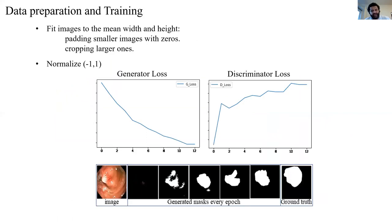We did a little preparation for data to fit the images to the mean width and height, padding smaller images with zeros and cropping the larger ones. We normalize the pixel values between minus one and one. And those plots show the generator and discriminator losses or learning curves.